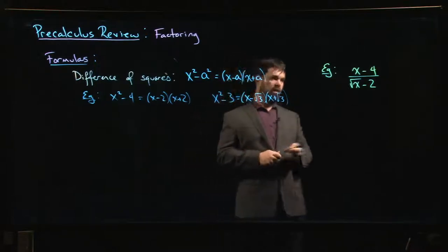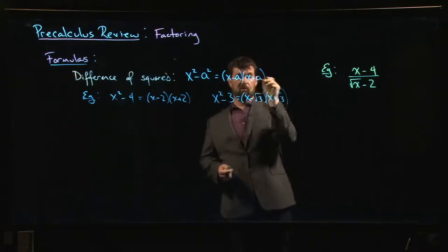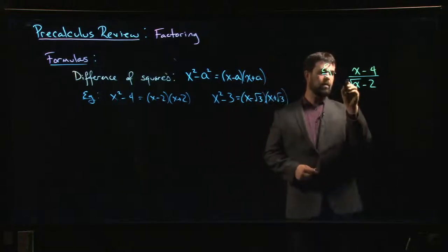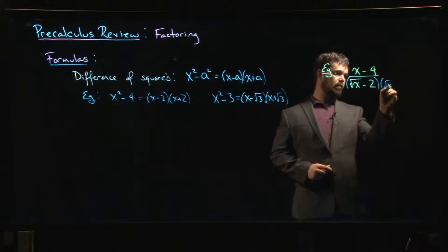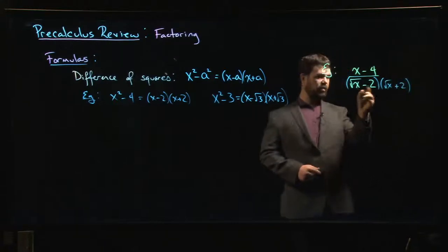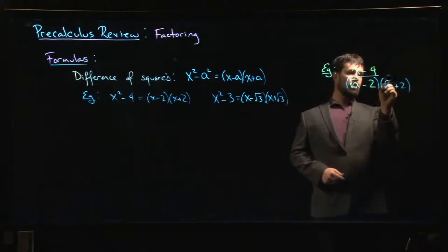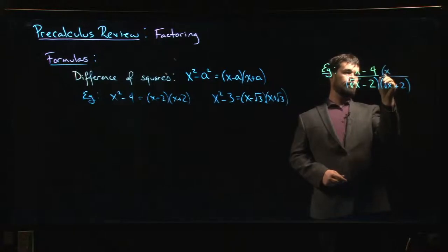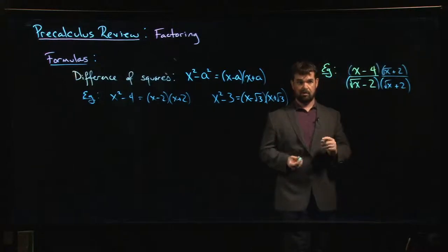I have this difference of squares thing going on, so if I multiply by the same thing but the opposite sign, I'm gonna square both of the terms. So if I take this and I multiply by root x plus 2, that's gonna get rid of the square root. Of course I can't do it on the bottom without also doing it on the top.